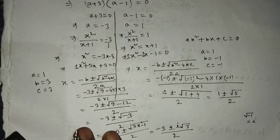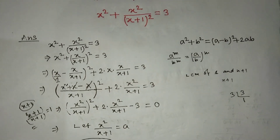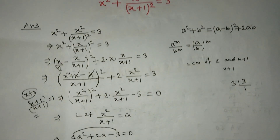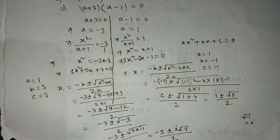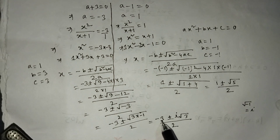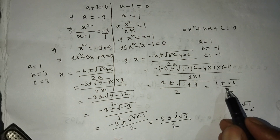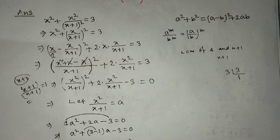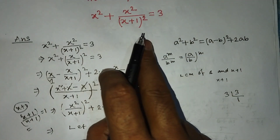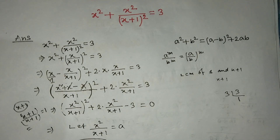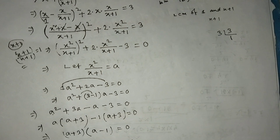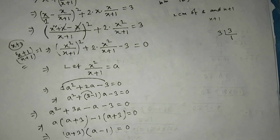This equation has 4 roots. Two roots are minus 3 plus or minus i root 3 divided by 2, and the other two roots are 1 plus or minus root 5 divided by 2. This equation has 2 real roots and 2 imaginary roots. Our answer is complete. If you like this video and these tricks, please support me and subscribe to my channel. Thank you, bye-bye.